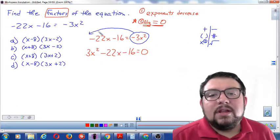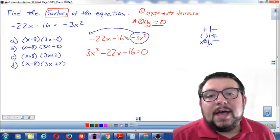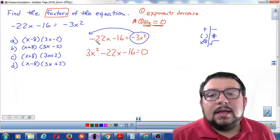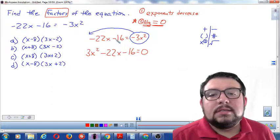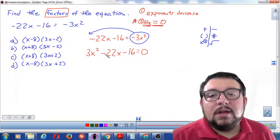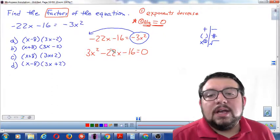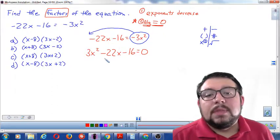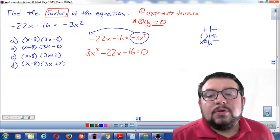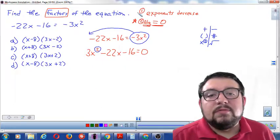Now, why did I move it all the way to the front? I could have moved it to the back. The order of terms does not matter—negative 22x, negative 16, they're right here. This negative 3x² became positive 3x², then equals zero. But why did I put it in the specific order I did? I want the exponents to decrease. That was rule number one.